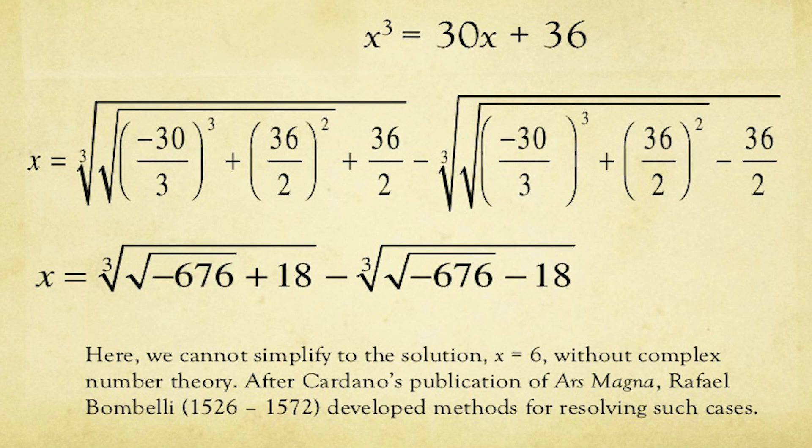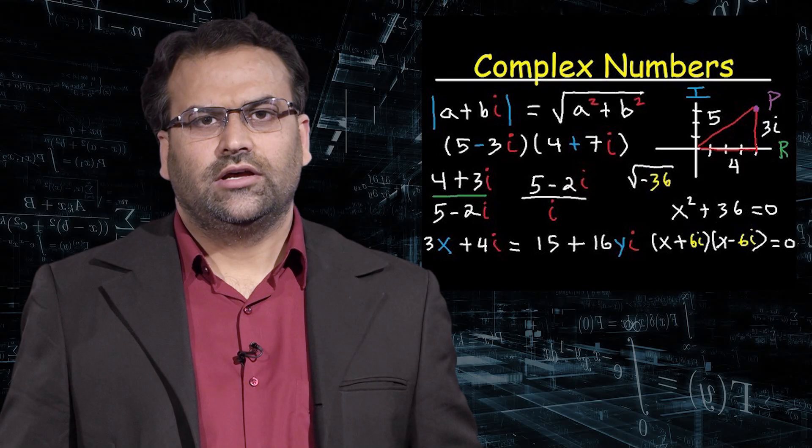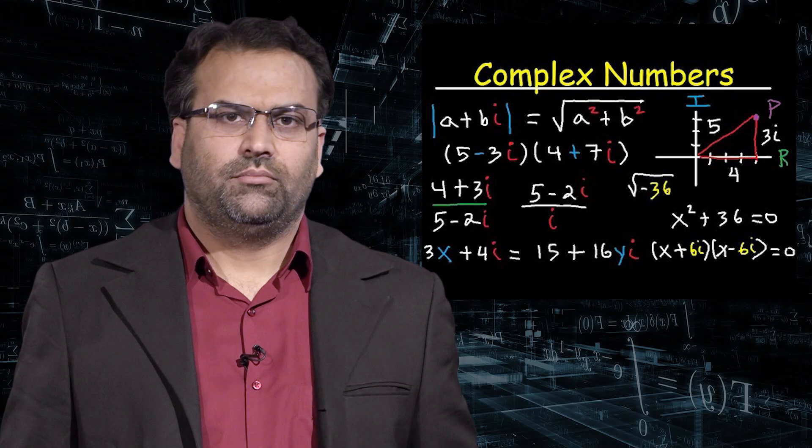After the publications of Ars Magna, another Italian mathematician, Rafael Bombelli, solved those cubic equations which involved the square roots of negative numbers. At that time, the square roots of negative numbers were considered as unreal, imaginary, and complex.